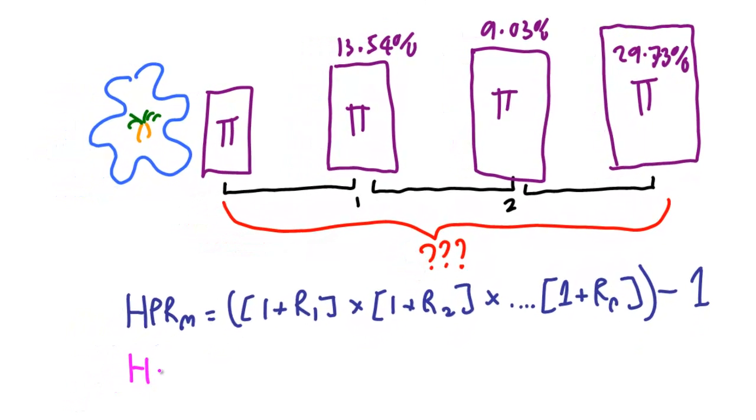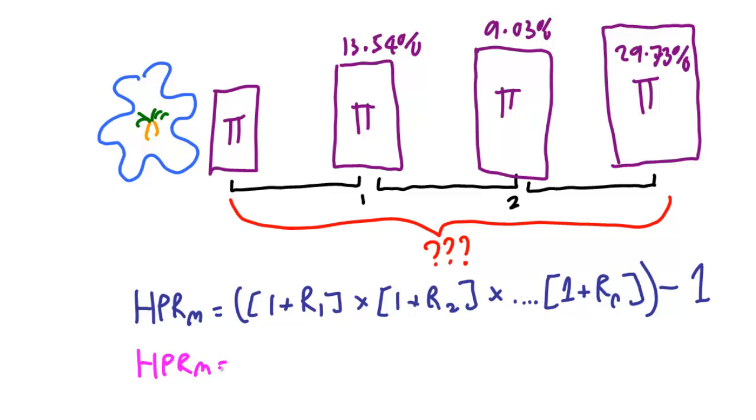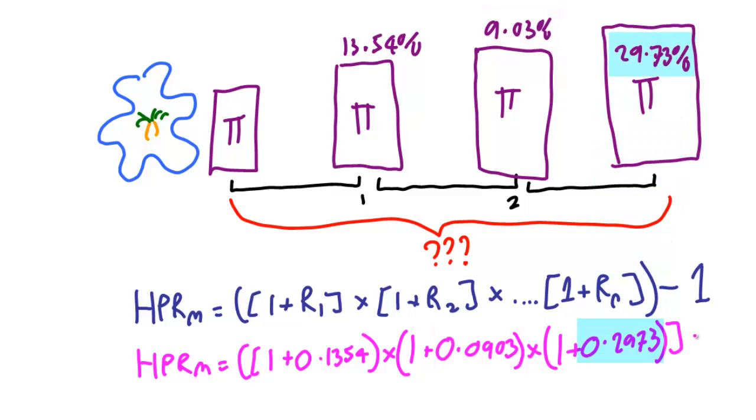So in our case, HPRM equals 1 plus 0.1354, multiplied by 1 plus 0.0903, multiplied by 1 plus 0.2973. We multiply together these three additions, and then we take away 1.